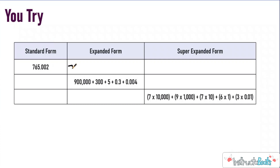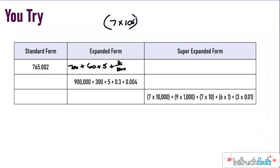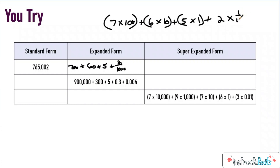Here I see that I had 700 plus 60 plus 5 plus two-thousandths. For super expanded form, I had seven multiplied by a factor of 100 because it's in the hundreds place, plus six times 10, plus five times one because it's in the ones place, plus two times one one-thousandth. Sometimes you'll see parentheses, sometimes you won't — I always put parentheses because I think it separates it really nicely. Hopefully you got that one right.